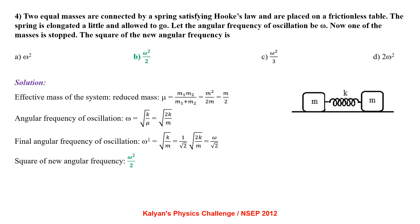Two equal masses are connected by a spring satisfying Hooke's law and are placed on a frictionless table. The spring is elongated a little and allowed to go. Let the angular frequency of oscillation be omega. Now one of the masses is stopped. The reduced mass μ equals m/2. Angular frequency omega equals √(2K/m). Final angular frequency omega' equals √(K/m), which is omega/√2. So the square of the new angular frequency is omega²/2.